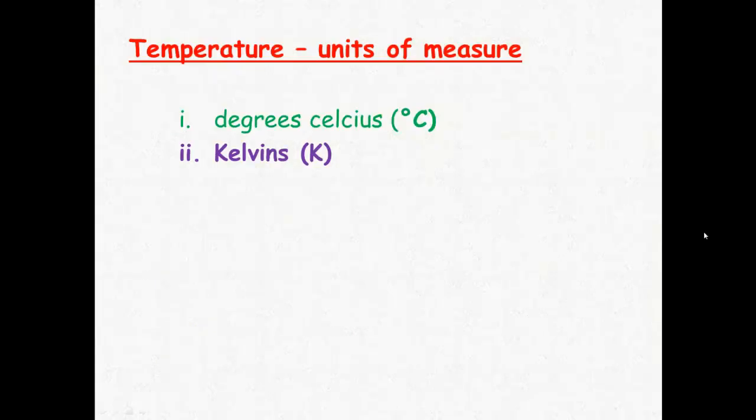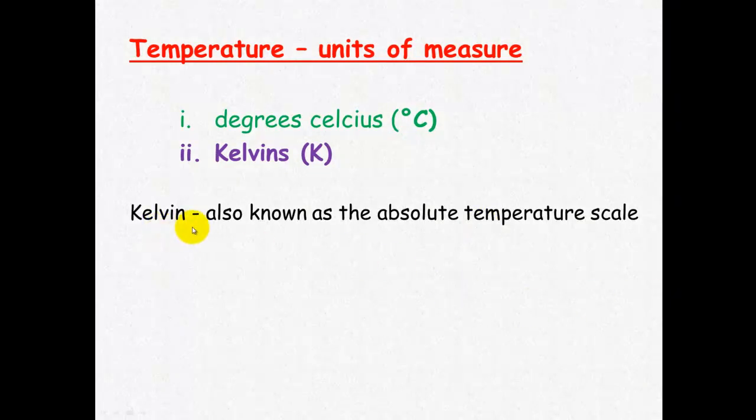The second type of unit of measure we need to worry about is temperature. We've all heard of degrees Celsius; now I'd like to introduce you to Kelvin. Kelvin is known as the absolute zero temperature scale because zero Kelvin is the lowest possible temperature, which is equivalent to minus 273 degrees Celsius. This makes converting between these two temperature scales very easy.